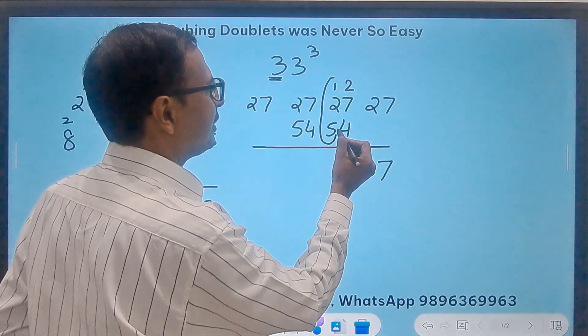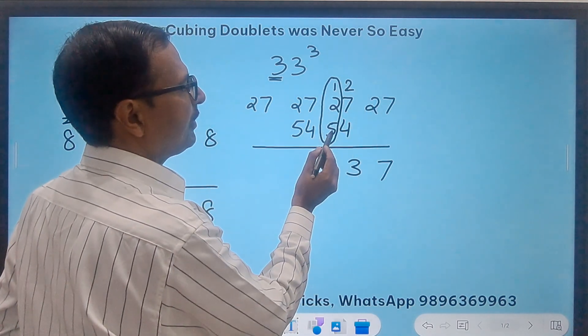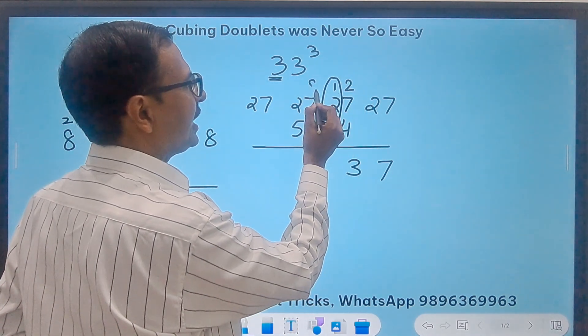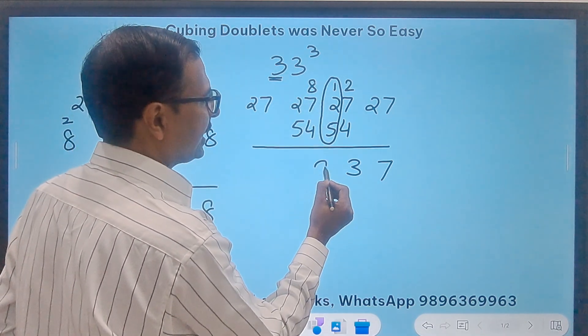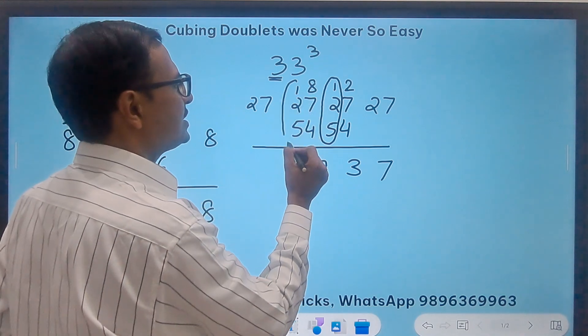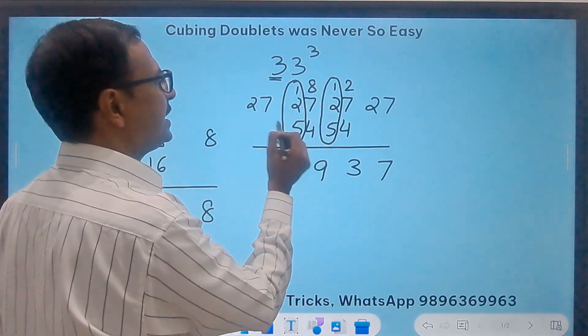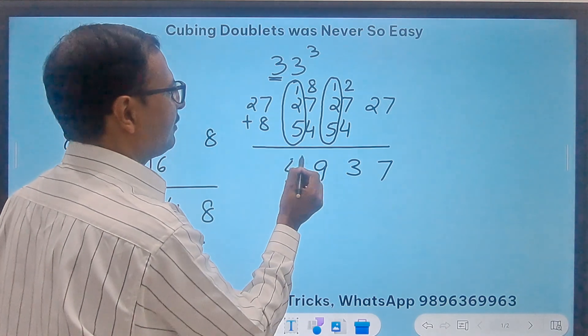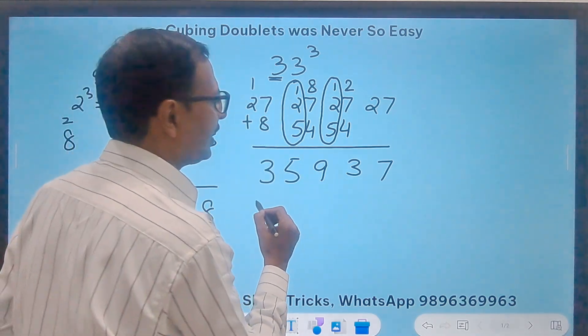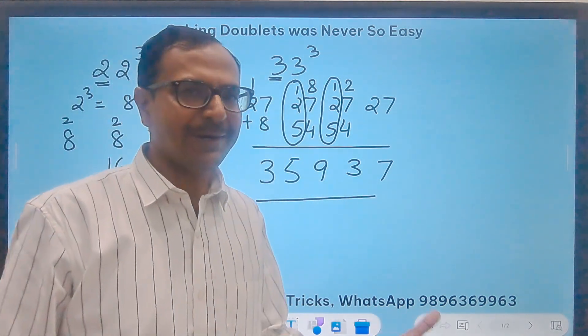And this part will become the carry forward number. 5, 6, 7, 8. So if I carry forward 8 here. 8 plus 4, 12 plus 7, 19. So 9 and a 1 carry. So this 5 plus 2 plus 1, 8 is the carry forward number here. And 8 plus 7, 15. 5, 1 carry means 3. 3, 5, 9, 3, 7 is the cube of 33.